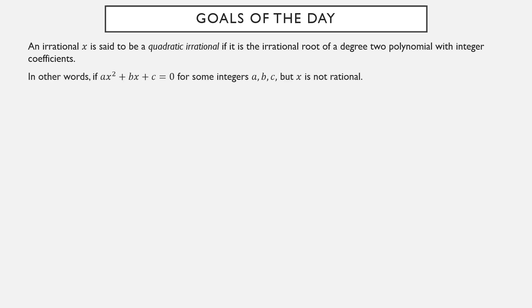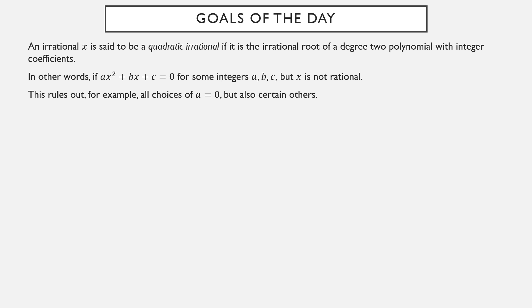In other words, ax² + bx + c = 0 for integers a, b, and c, but x doesn't happen to be a rational number. This rules out, for example, any choice of a = 0. If you have a quadratic in air quotes and a is equal to zero, it was actually linear and the root is a rational number when b and c are integers. However, there are other choices of a, b, and c where a isn't zero but the solutions happen to be rational numbers.